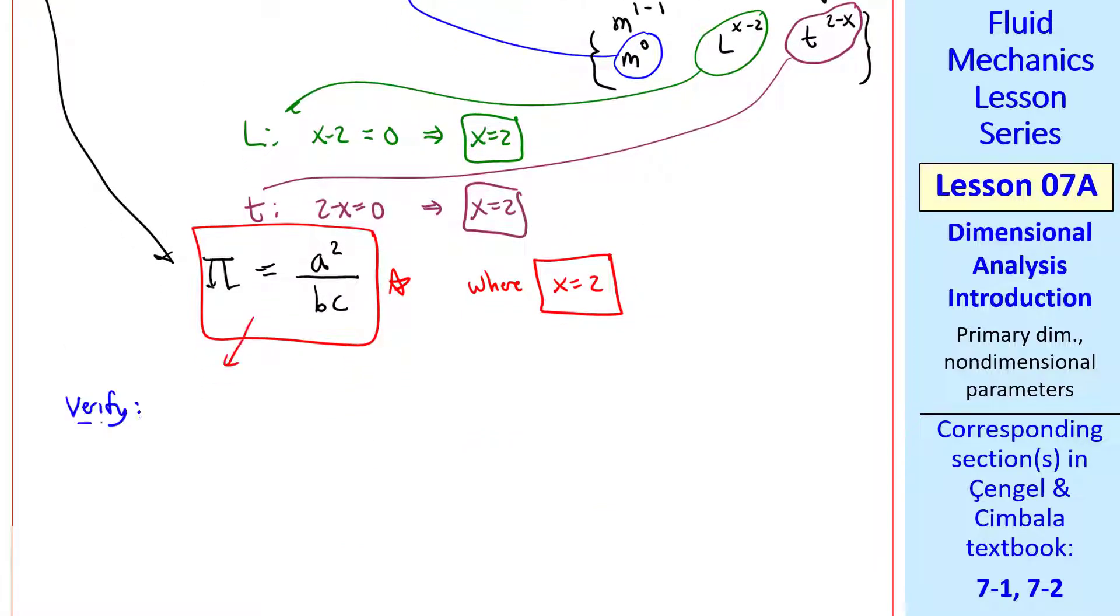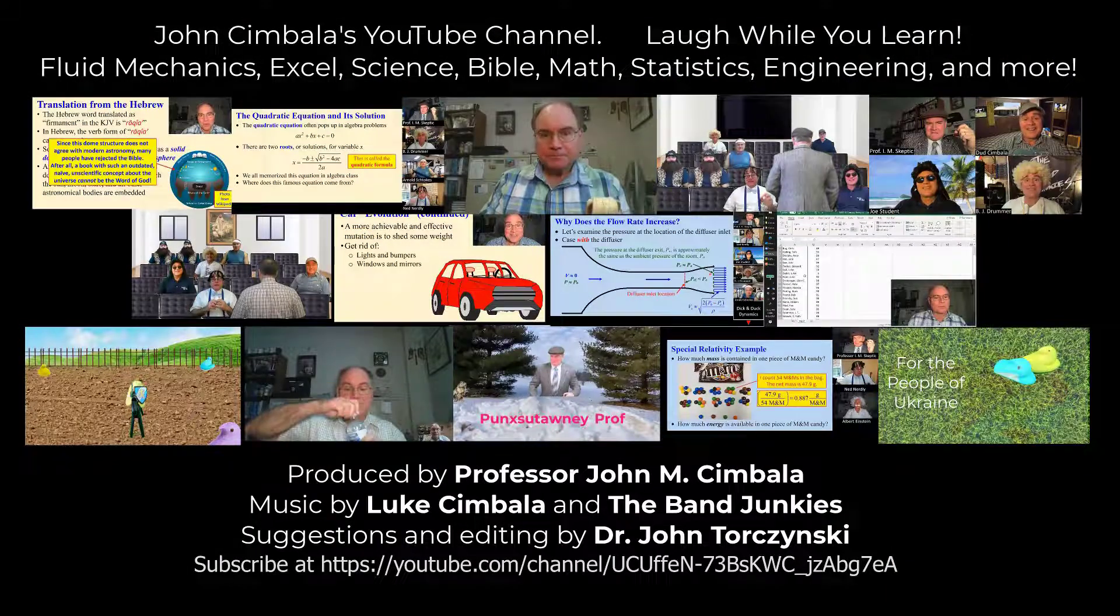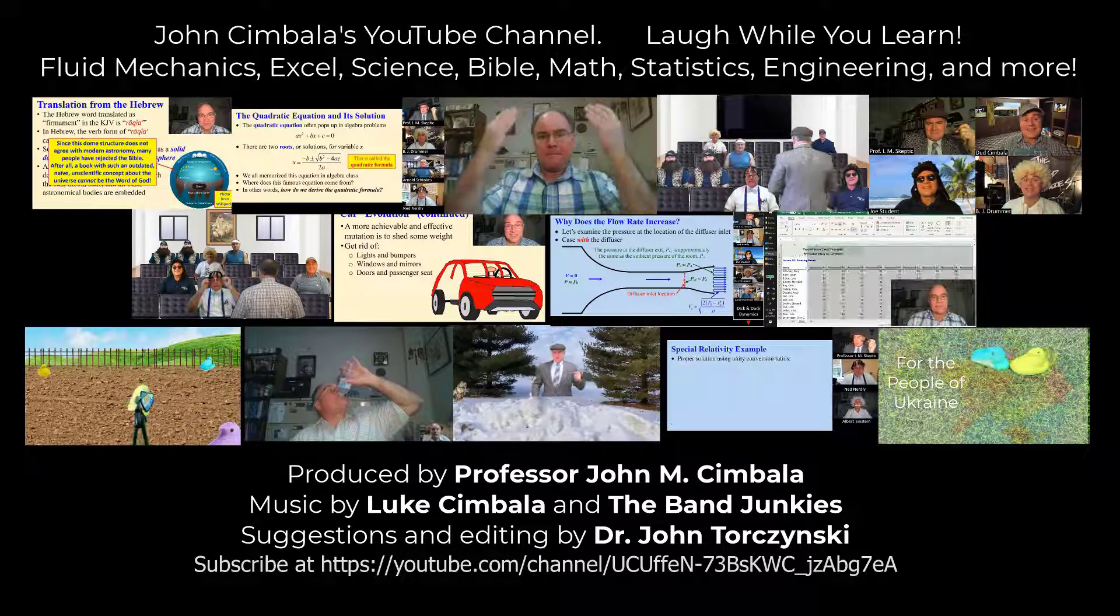It's always good to verify your final answer by testing the dimensions of the pi. A had dimensions of L over T, and it's squared. B had dimensions of L cubed over M, but it's in the denominator, so we write M over L cubed. And C had dimensions of M over L T squared, but again, it's in the denominator, so we write L T squared over M. The M's cancel. I have two L's and a third L in the numerator, which cancels L cubed in the denominator, and this T squared cancels this T squared. So pi is indeed a dimensionless parameter. Thank you for watching this video. Please subscribe to my YouTube channel for more videos.